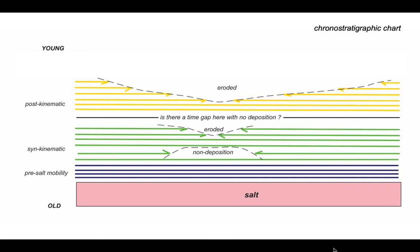But because the yellow appears to be constant thickness apart from that erosional process, it looks like it's behaving as a post-kinematic succession. In other words, the salt wasn't moving at the time the yellow rocks were deposited.